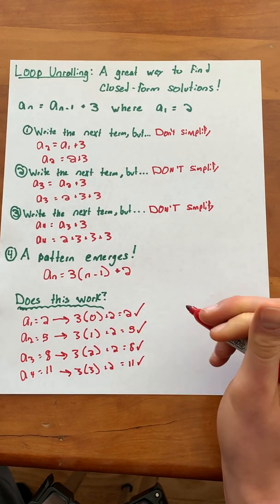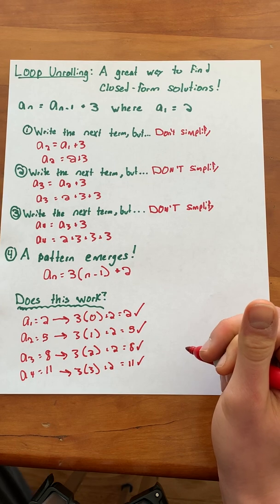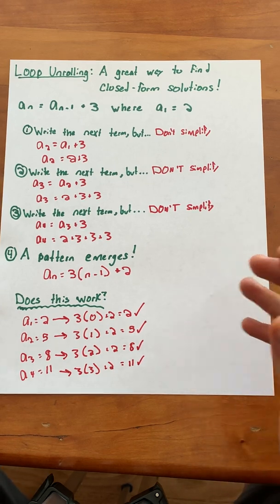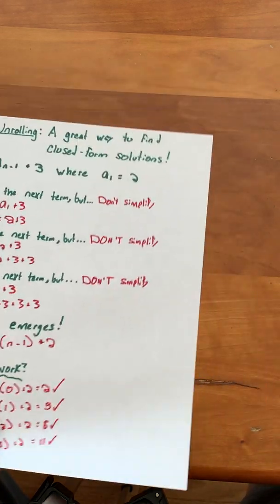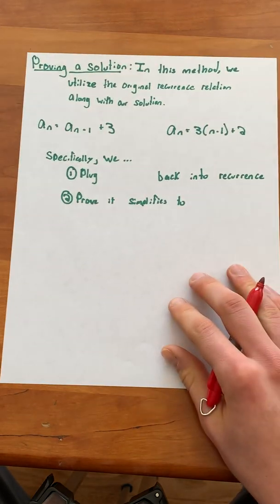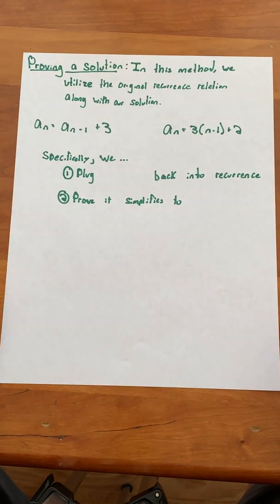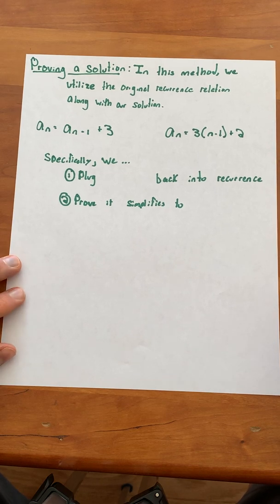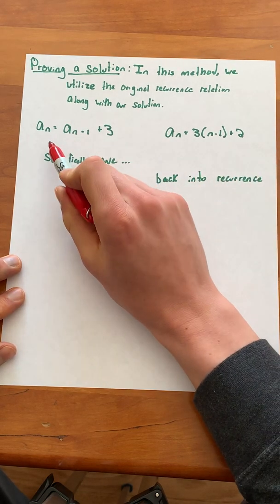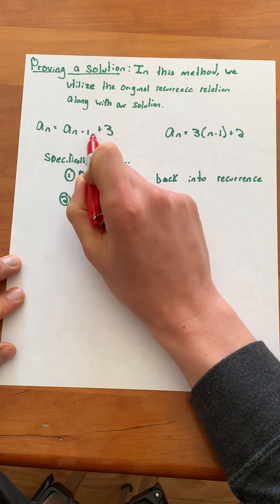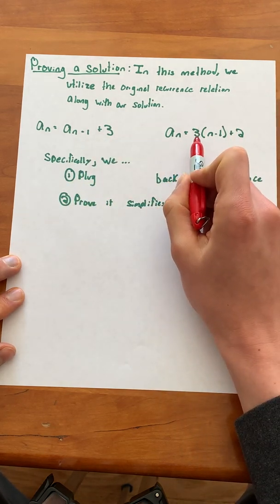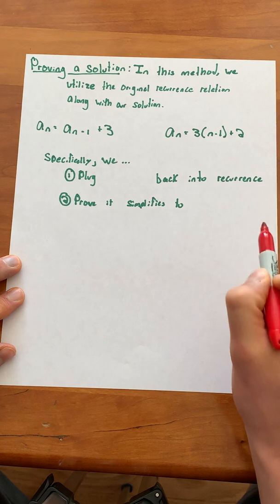So this seems like a pretty good way to show that it works, but there's actually a way that we can really prove that our solution works. In this method we are going to utilize the original recurrence relation along with our solution. So our original recurrence relation was a of n equals a of n minus 1 plus 3, and we found the solution a of n equals 3 times (n minus 1) plus 2.